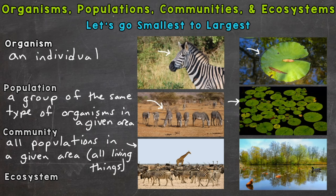As far as the pond community, we would add all of the living things again — so all of the insects, the lily pads, any birds or fish around. Those would all be members of that pond community.